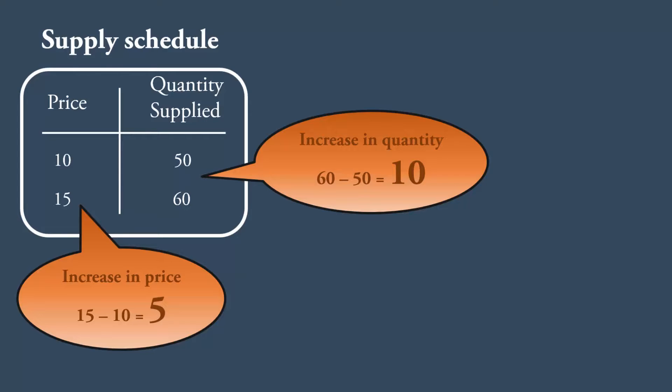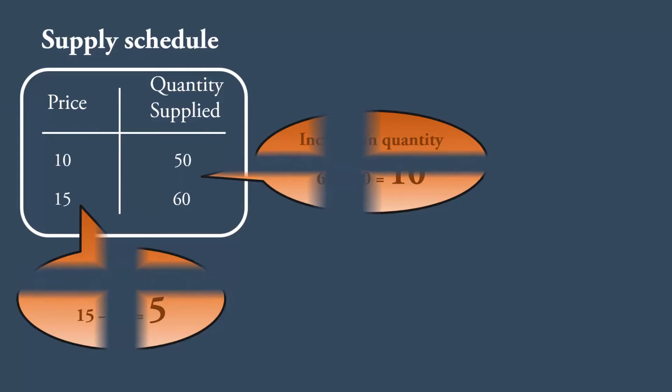This will make us conclude that a small increase in price causes a big increase in quantity. This is a wrong conclusion. The fact is, the price change is larger than the change in quantity. How? Compare the percentage changes of both in price and quantity.